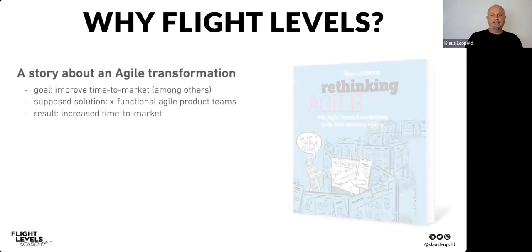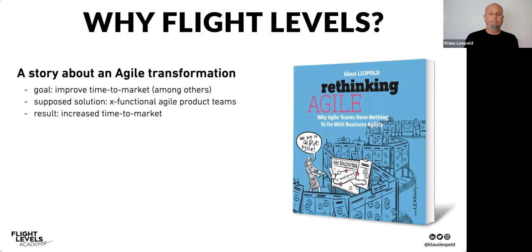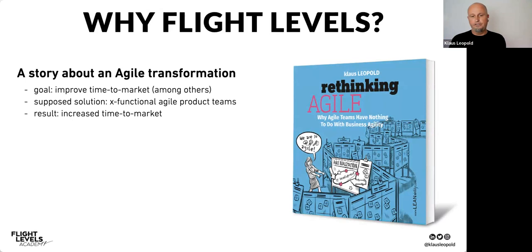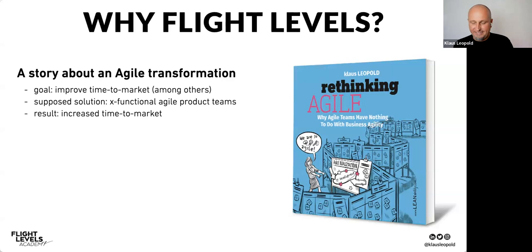The 'why' is captured in my book 'Rethinking Agile' — a picture book with many illustrations telling the story of an actual transformation that didn't go as expected. One of the main goals was to improve time to market. They did a huge reorganization, built cross-functional agile product teams, spent a shipload of money — and the result was that time to market actually increased. Not the expected outcome.